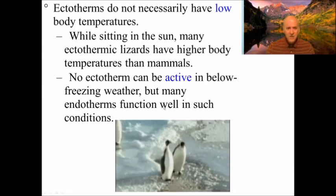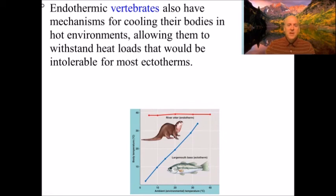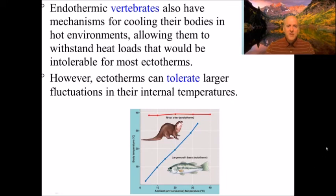Endothermic vertebrates also have mechanisms for cooling their bodies in hot environments, allowing them to withstand heat loads that would be intolerable for most ectotherms. However, ectotherms can tolerate larger fluctuations in their internal temperature. An alligator's body temperature can change by tens of degrees, whereas if your body temperature rose 10 degrees above normal you'd likely die. Our cooling mechanisms include sweating — water evaporates from the skin, taking heat away — while dogs pant, and there are many other adaptations.